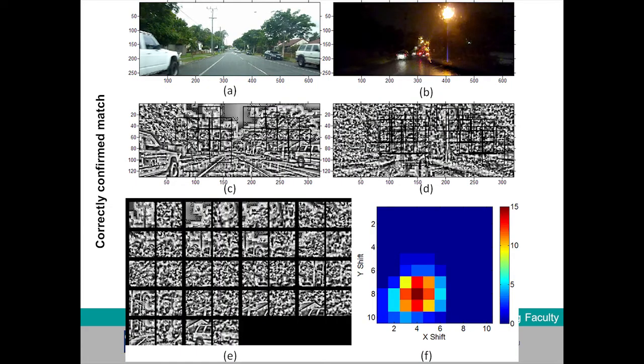This slide shows an example correct match output by the system. The images at the top of the slide are of the same place under different conditions. You can see the contrast-normalised images that the patch matching is performed on in the middle of the slide, and the patch match pairs output at the bottom left. The shifts at which these patch matches were made were all very coherent, as revealed by the very sharp two-dimensional histogram at the bottom right.